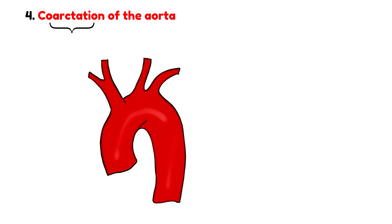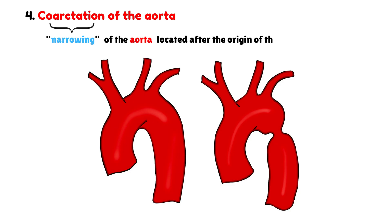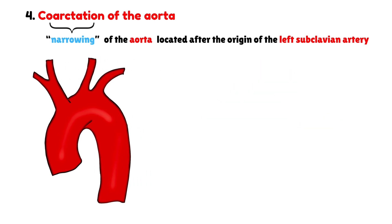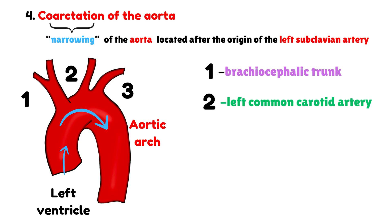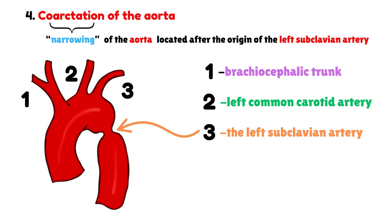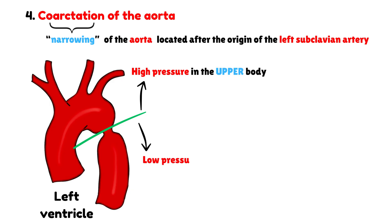Let's talk about the coarctation of the aorta. The term coarctation literally means narrowing, and in this condition it refers to a constriction of the aortic lumen, usually located just after the origin of the left subclavian artery, near the site of the ductus arteriosus. Imagine the course of the aorta: it arises from the left ventricle, arches to form the aortic arch, and gives off three arteries — the brachiocephalic trunk, the left common carotid artery, and the left subclavian artery. The coarctation typically occurs just beyond this point. Because of this narrowing, blood leaving the left ventricle faces significant resistance and high pressure above the constriction, while below it, the blood flow is reduced and the pressure is lower.